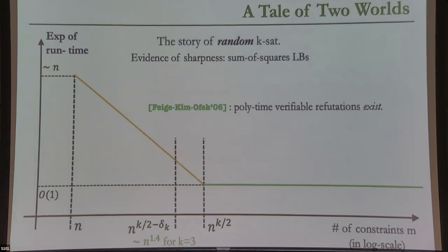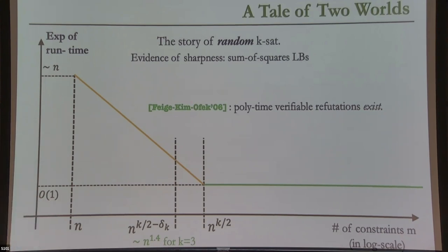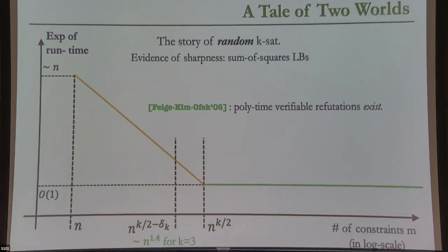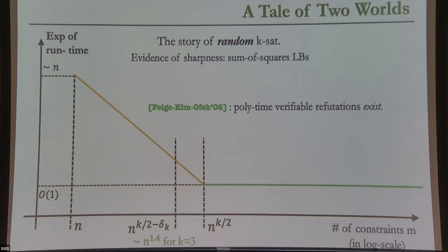There is another mysterious phenomenon that seems to occur in the context of random KSAT. There is a regime strictly below the spectral threshold — in fact, polynomially below, short by some N^epsilon factor — such that in this regime there exist polynomial-size refutations: witnesses of polynomial size that you can efficiently verify to check that the formula is unsatisfiable, even though we don't know any polynomial-time algorithm to find them.